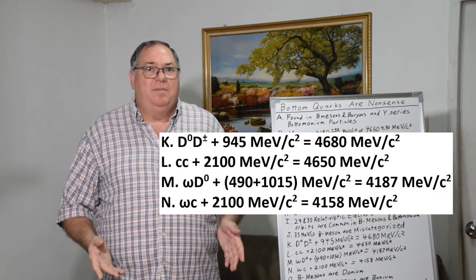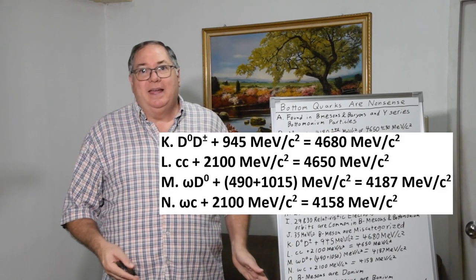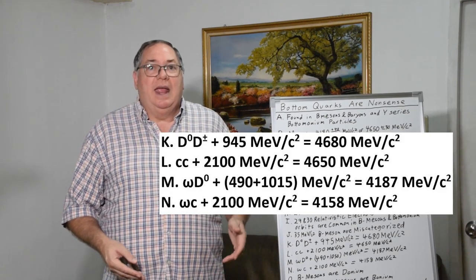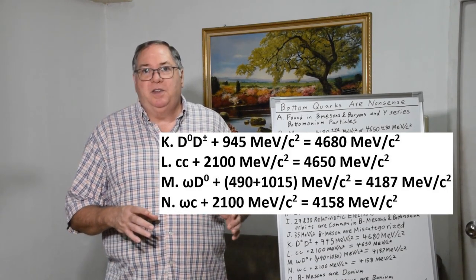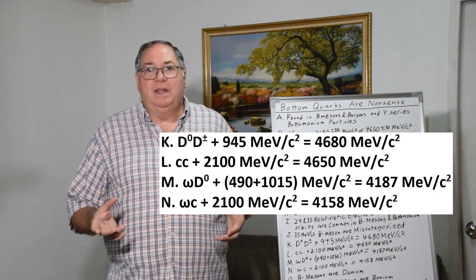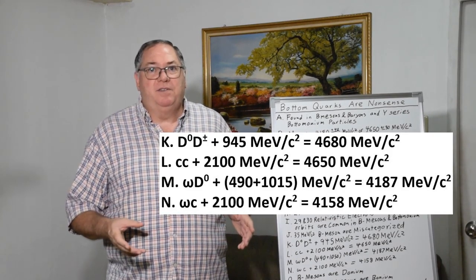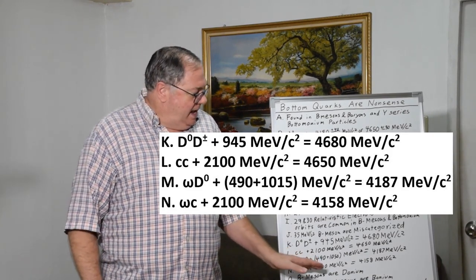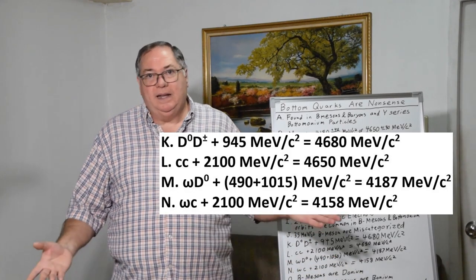To get the lower mass estimate, we can look at an omega and a D. With the omega, which is two light kaons, you can add 490 MeV, which essentially gives you the mass energy of the charm quark. Then add your orbital energy and you get 4187.